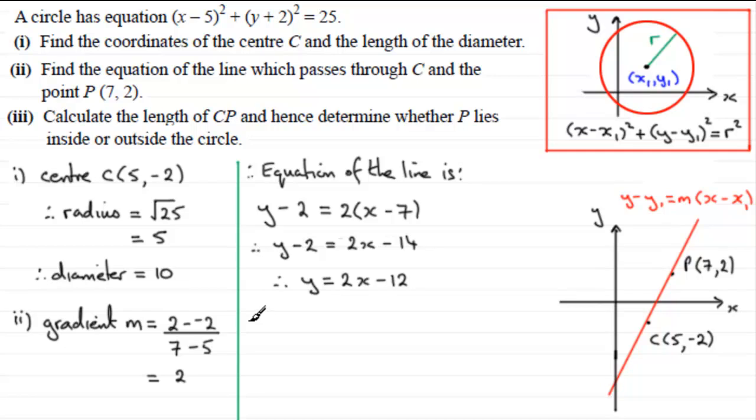Now in part 3, what we've got to do is calculate the length of C to P and hence determine whether P lies inside or outside the circle. So to do this, we'll first of all calculate the length CP, and we can do this by using Pythagoras' theorem. CP will be equal to the square root of the sum of the squares of the difference between the x-values plus the difference in the y-values. Essentially, we've just got to imagine our triangle in here using Pythagoras' theorem.